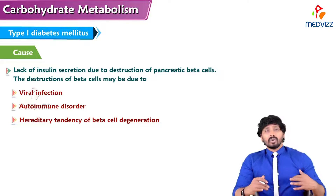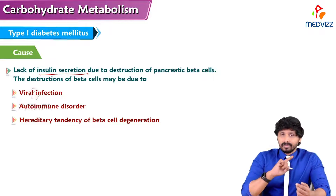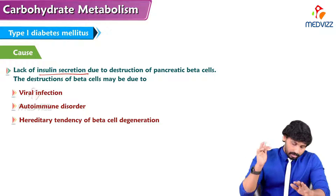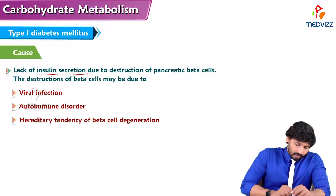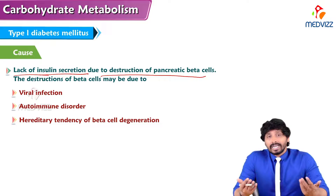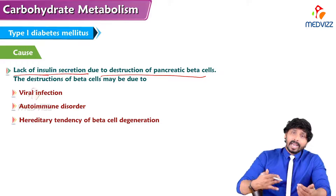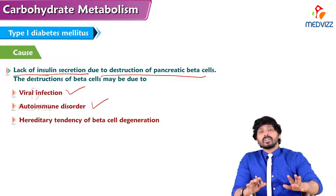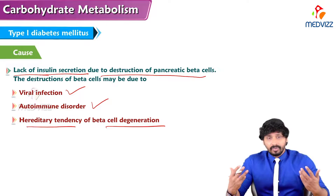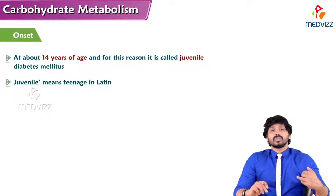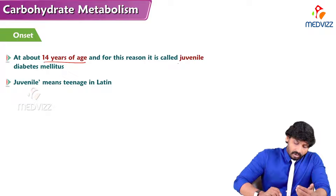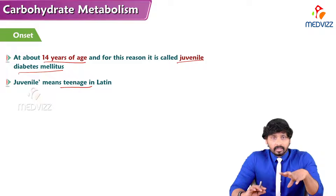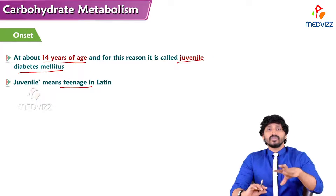For Type 1 diabetes mellitus, the cause is lack of insulin secretion due to destruction of pancreatic beta cells. The pancreatic cells are diseased and inactive. Reasons include viral infection to the pancreas, autoimmune disorders where autoantibodies destroy pancreatic beta cells, and hereditary tendency of beta cell auto-degeneration. The onset is at about 14 years of age — hence the name juvenile diabetes mellitus — as the diabetes presents at the teenage level.